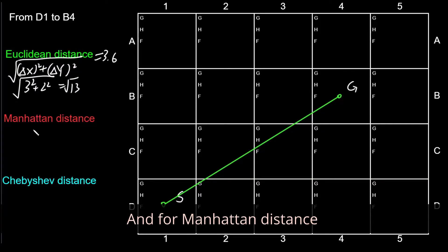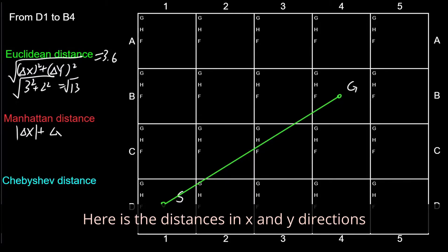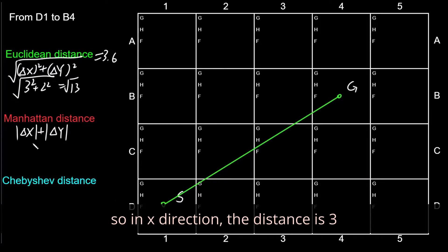And for Manhattan distance, its value is the sum of the distance in the orthogonal directions. Here is the distance in x and y direction, so in x direction, the distance is 3 and in y is 2, so the overall distance is 5.